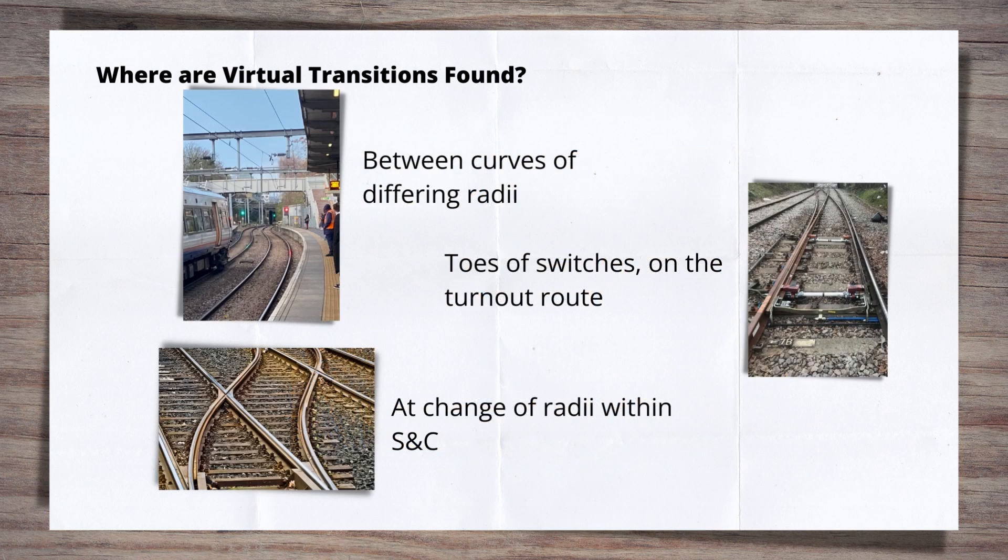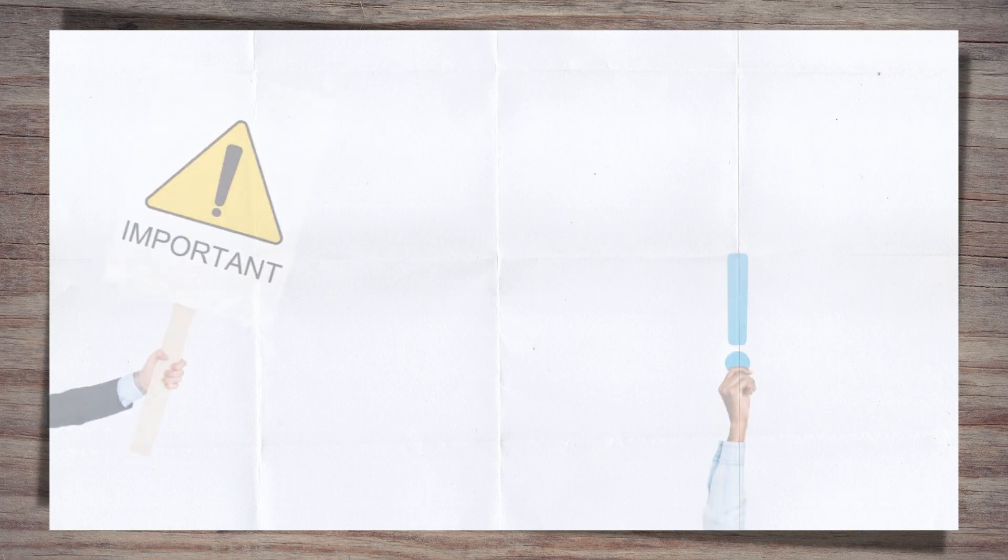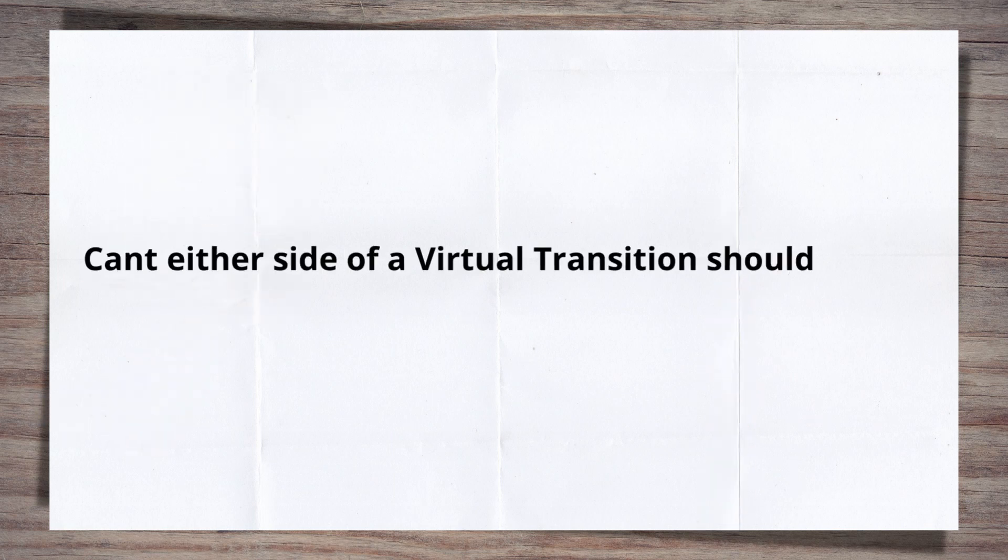Now, the most important thing to remember, apart from the 12.2, when it comes to virtual transitions, is the fact that the cant either side of the virtual transition must be the same. Only the radius changes.